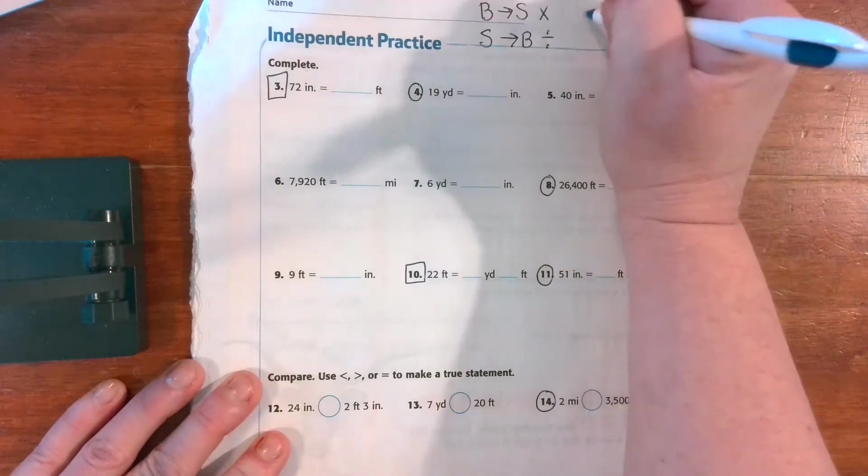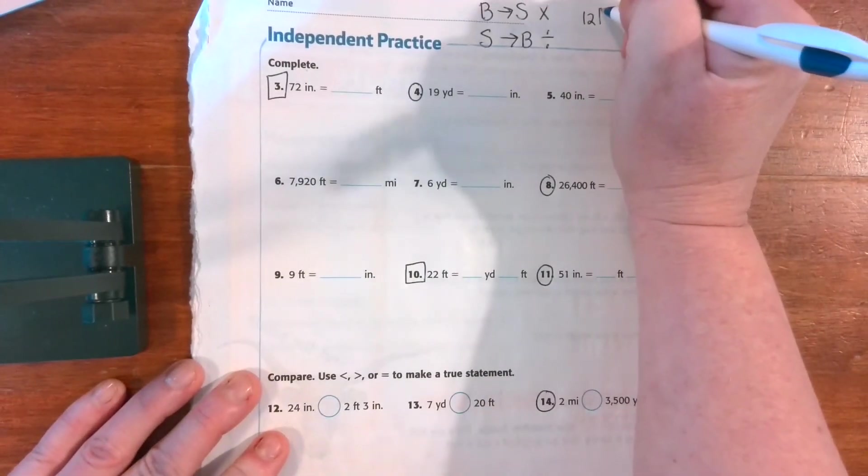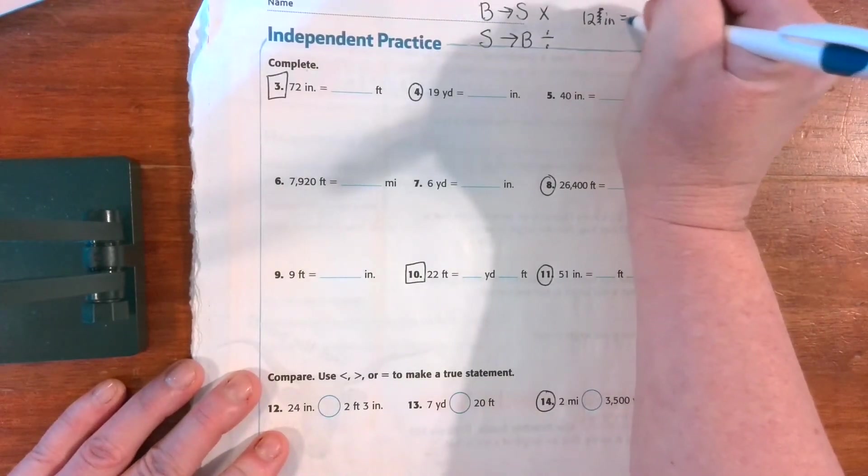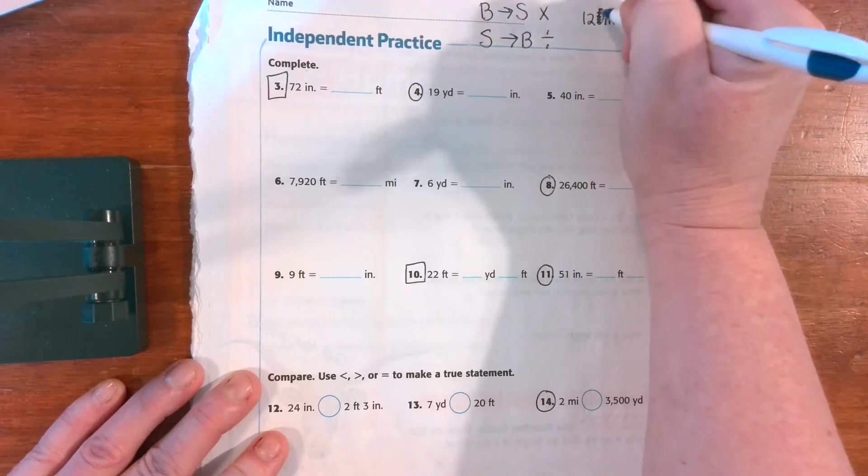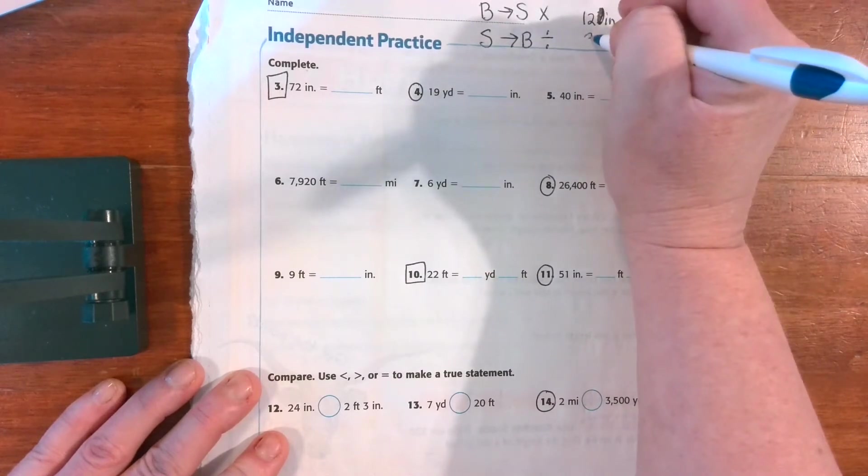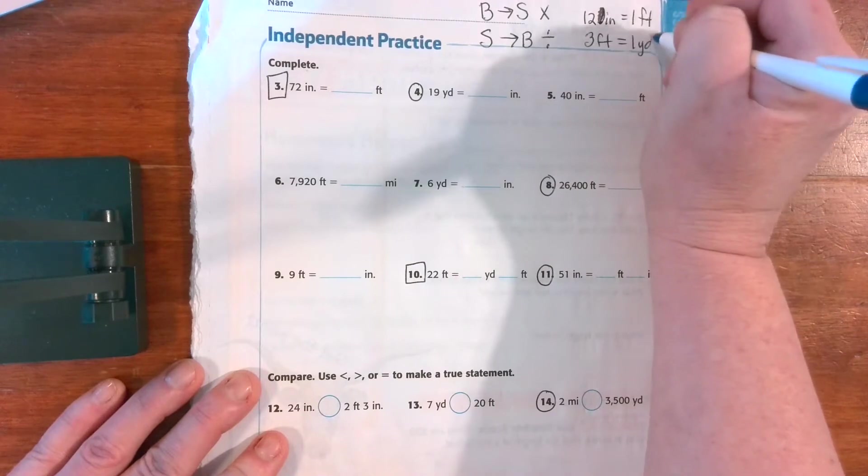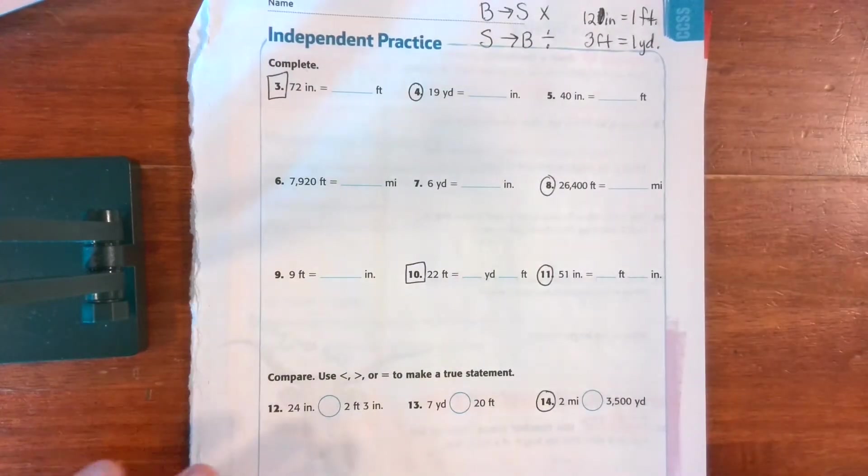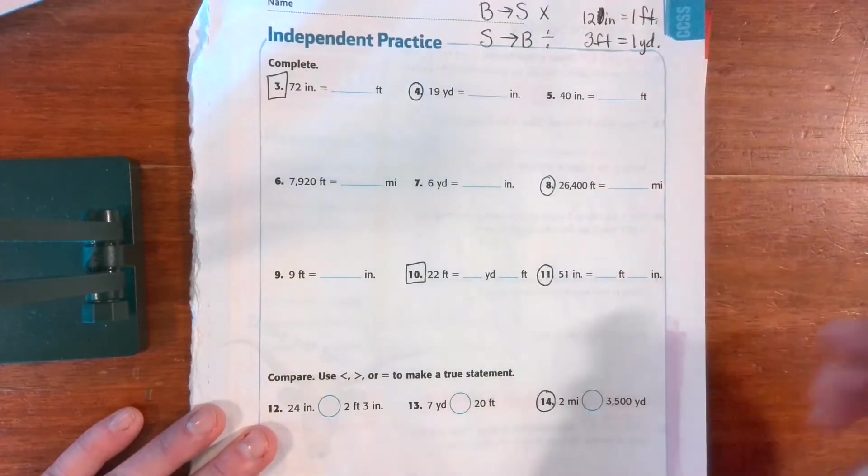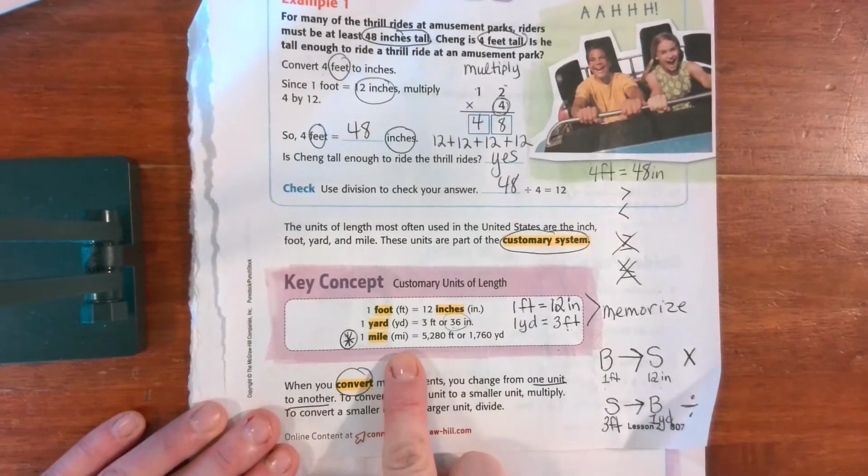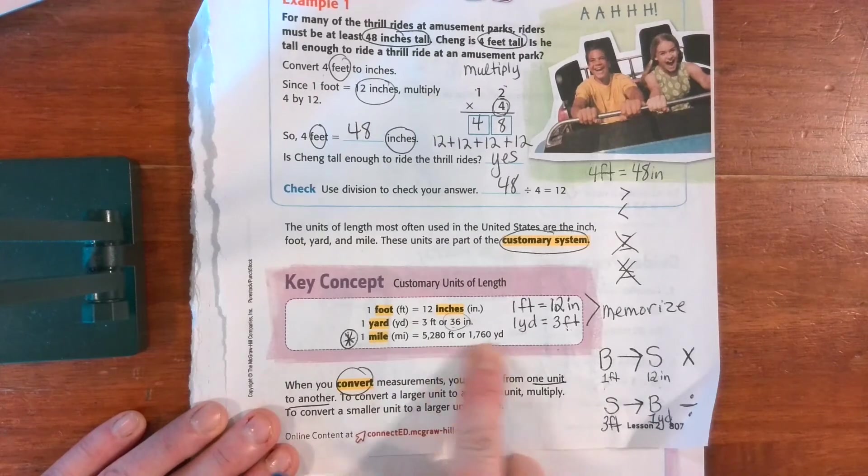So we need our formulas: 12 inches equals 1 foot. Remember, they aren't going to give you these. 3 feet equals 1 yard. So you're going to write those at the top. You can use your formula on the first one, right here for miles, feet, and yards.